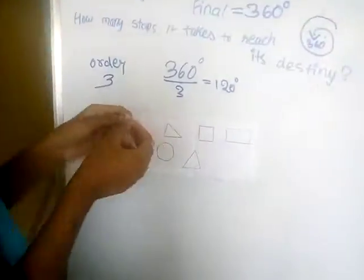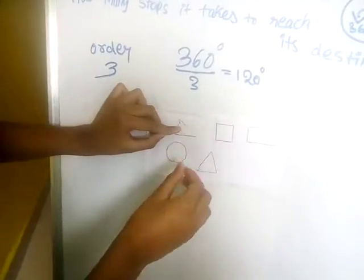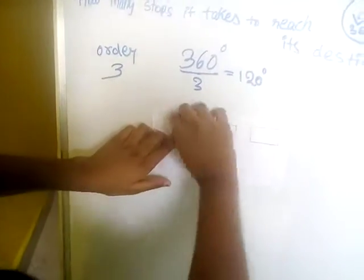This is an isosceles triangle. So just place in here. Now I will turn.